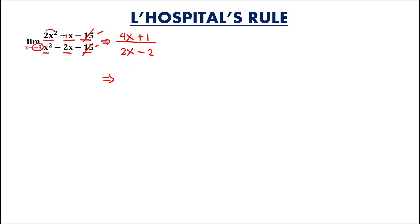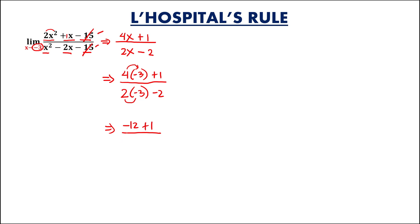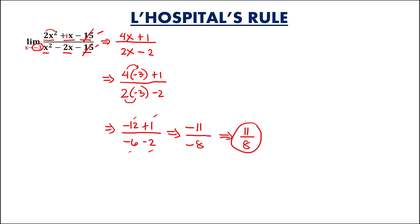Using direct substitution as x approaches negative 3, this becomes 4 times negative 3 plus 1, over 2 times negative 3 minus 2. Simplifying: 4 times negative 3 is negative 12, plus 1 gives negative 11, over 2 times negative 3, which is negative 6, minus 2 gives negative 8. Since both are negative, this becomes positive 11 over 8.